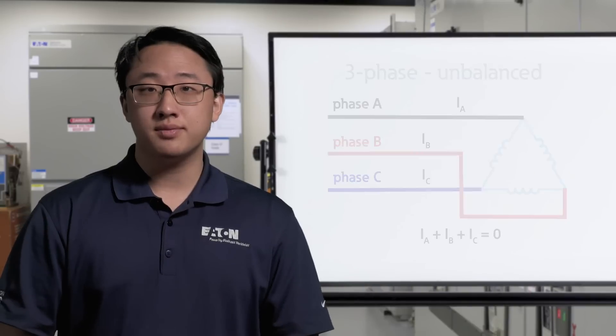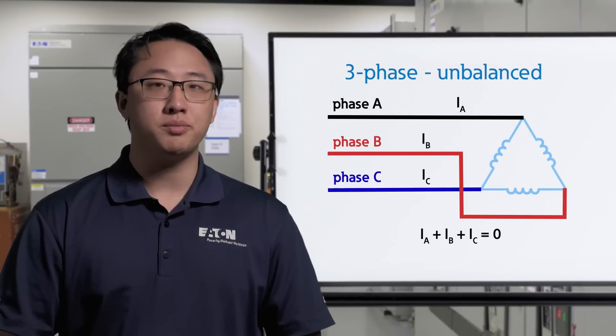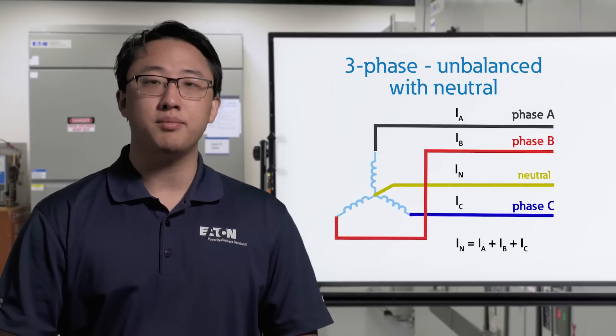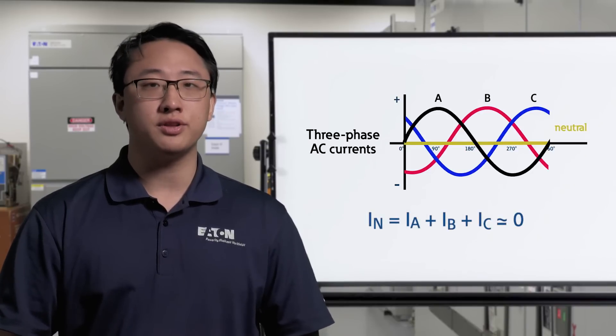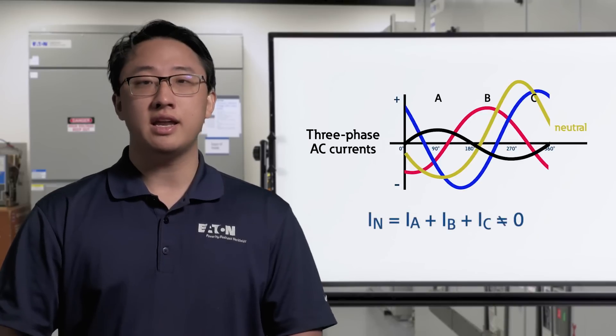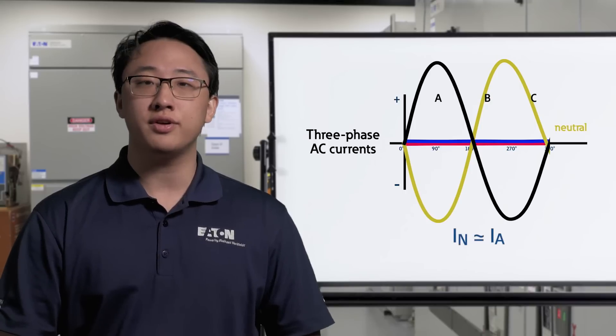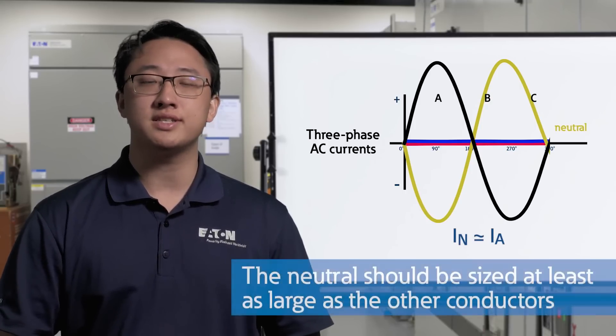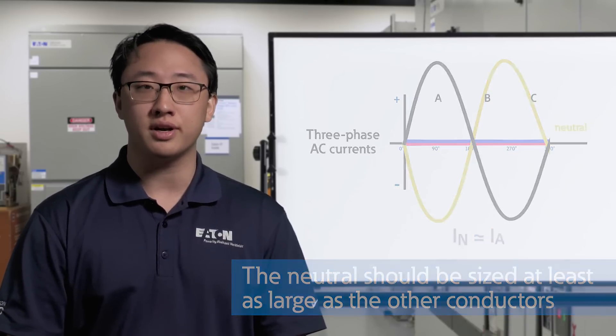Now, a three-phase system without a neutral could also have unbalanced currents, but they would still have to add up to zero or power would be restricted. Having a neutral allows for full power operation with unbalanced currents on each individual phase. A mostly balanced system won't carry too much current on the neutral, but poorly balanced systems can have significant amounts. In an extreme case, a single phase load on a three-phase system would have all of its current on one phase and returning on the neutral. This is why the neutral wire must be sized at least as large as the other conductors, oftentimes even larger today to account for extra harmonic content.